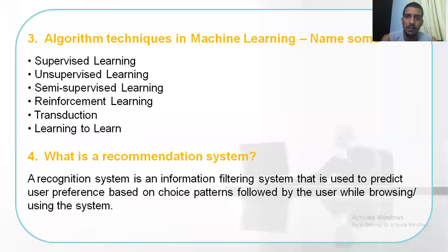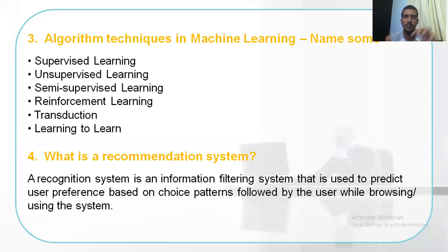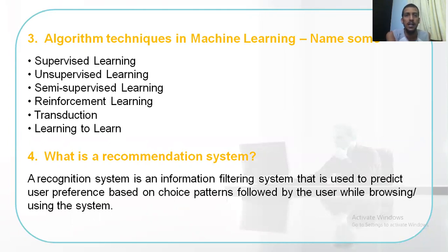The third question is: name some algorithm techniques in machine learning. There is supervised learning, unsupervised, semi-supervised, reinforcement learning, transduction, and learning to learn. We would be looking at all these variants in detail as we keep going further, so do stay subscribed. We have also covered some videos on understanding different languages like Python, Scala, Tableau, R, and Apache Spark — these are the languages we've already looked at at a basics level. As we keep going ahead, we will also look at these languages in technical terms and try to code on them.